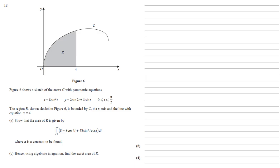Figure 6 shows a sketch of the curve C with parametric equations x equals 8 sine squared t and y equals 2 sine 2t plus 3 sine t for t between 0 and pi over 2.